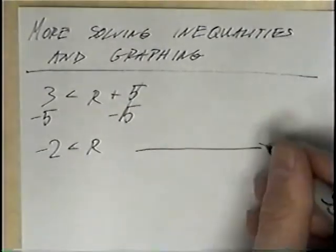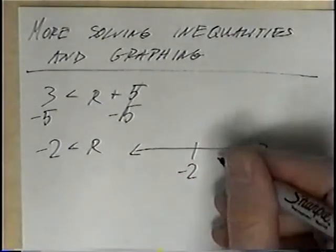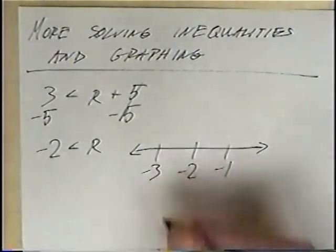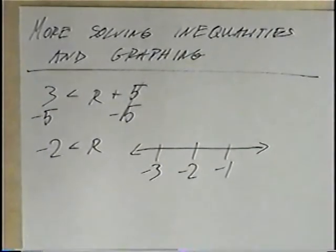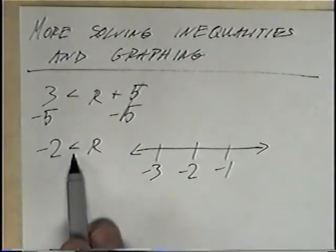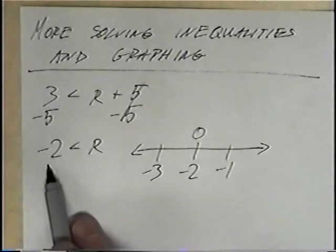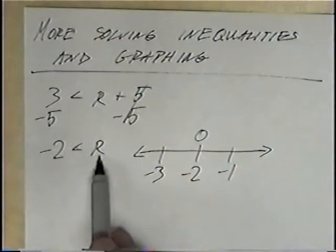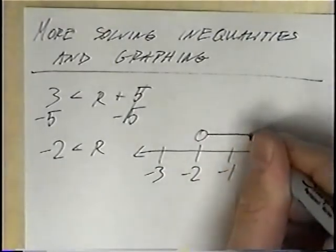To graph this, we draw a number line and put negative 2 in the middle, with one number to the right and one to the left. To the right of negative 2 would be negative 1, and to the left would be negative 3. Since it is just less than with no line on the bottom, it is not equal to, so that is an open point. Negative 2 is less than r means negative 2 is smaller and r is bigger, so we want the bigger numbers from negative 2 — bigger numbers go to the right.